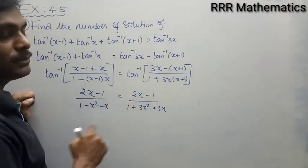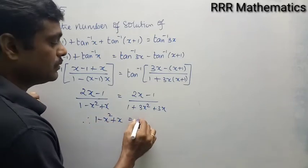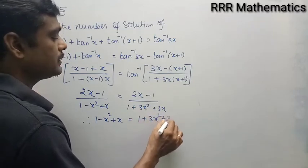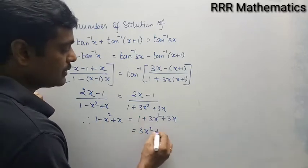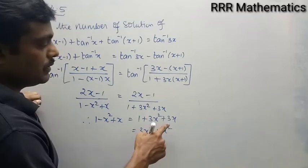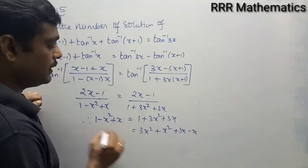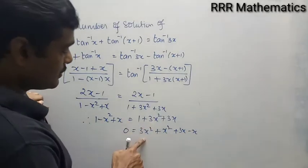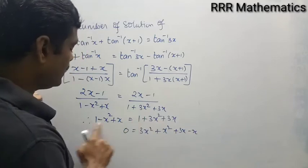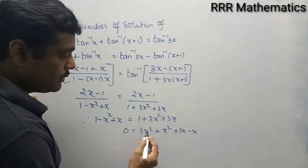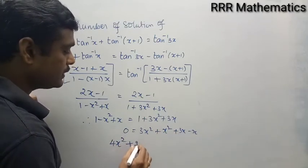The numerators 2x minus 1 on both sides cancel. So the denominators must be equal: 1 minus x squared plus x equals 1 plus 3x squared plus 3x. Moving terms to one side: 3x squared plus x squared gives 4x squared, and 3x minus x gives 2x, and the 1's cancel. Therefore we get 4x squared plus 2x equals 0.